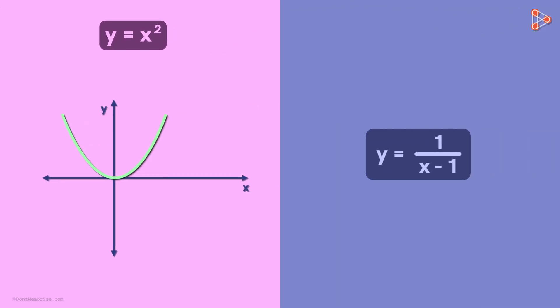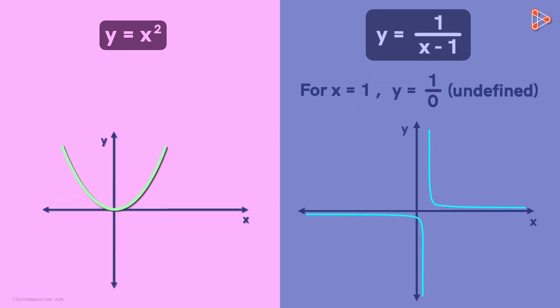But now look at this function. What will be the value of the Y variable for X equal to 1? For X equal to 1 here, we get 1 divided by 0. Anything divided by 0 is undefined. Now if we draw its graph, it will look like this. So we see that this function is not defined for X equal to 1. But for all other values of X, we will get one value of Y. So except for X equal to 1, the function is defined for all the other values of X.